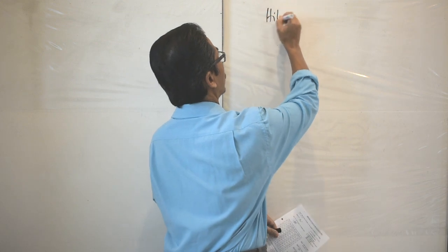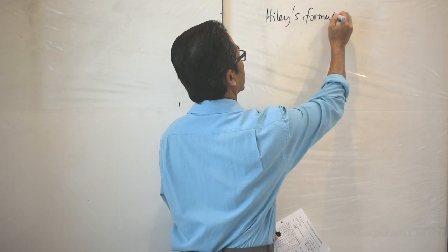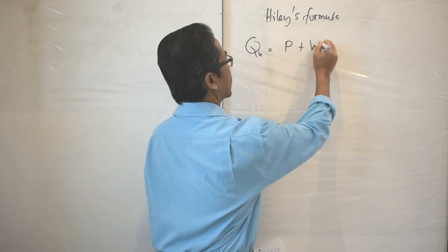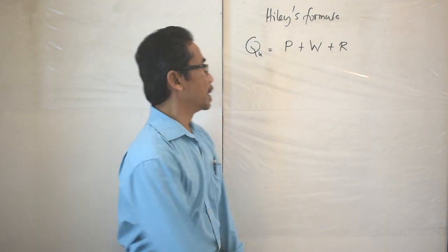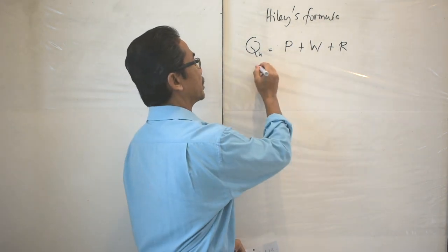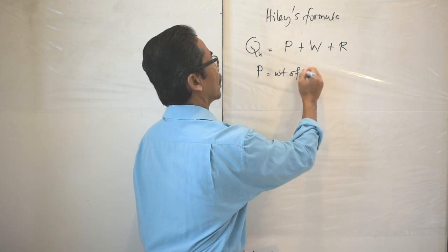In dynamic formulas there are quite a number you can use, like the ENR formula (Engineering News Record formula), Janbu's equation, Hiley's equation, and so forth. In this particular case I would like to talk about the Hiley formula to estimate pile capacity based on the dynamic equation. The Hiley equation is given as Q_u = P + W + R, which is the total ground resistance offered by the pile, where P is the weight of the pile.